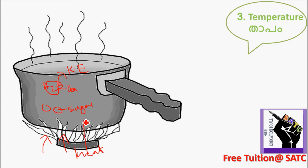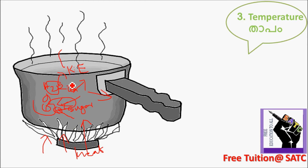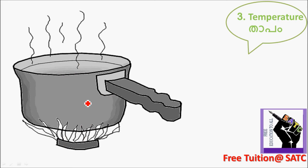Heat is a form of energy. So the molecules of water or tea get kinetic energy, and they move fast in random motion. So the molecules of tea move fast — they move faster.